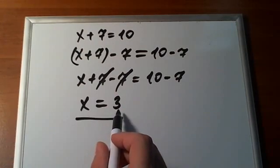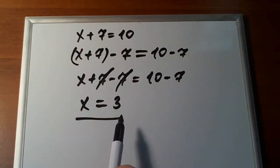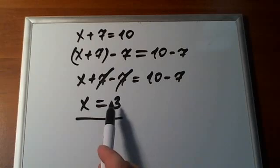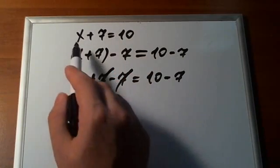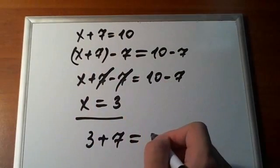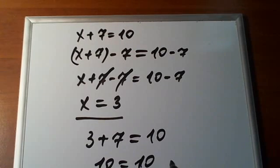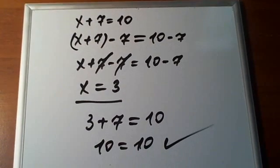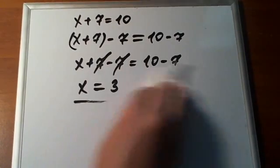3 is the solution of our linear equation. If you want to check and make sure we didn't make any mistakes, we can plug in 3 into the original linear equation. Instead of x, we have 3 plus 7, which has to equal 10. 3 plus 7 is indeed 10, so 10 is equal to 10 — we're good. It's always a good idea to check your solution to make sure you didn't make a mistake somewhere.